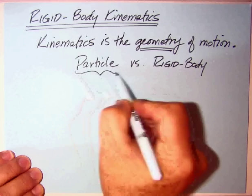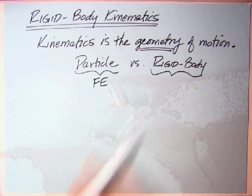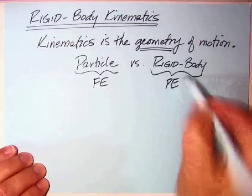Particle and rigid body. Particle is sort of what you cover first in a dynamics class and pretty much is restricted to the FE, whereas rigid body is more for the PE, although you could have some simple rigid body in the FE, but these are the two big divisions within kinematics.